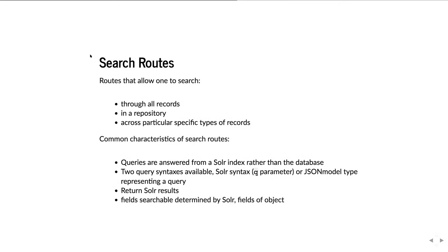ArchivesSpace has several search routes. Some common ones are /search, which searches all records, and /repositories/:id/search, which searches everything in a repository. It also has searches for specific record types. All these search routes have common characteristics — you send them basically the same parameters and they return a Solr result set. Notably, they're answered from the index rather than the database, which means they generally come back faster, but if the index is out of sync with the database, recently added records won't necessarily show up in the search yet.